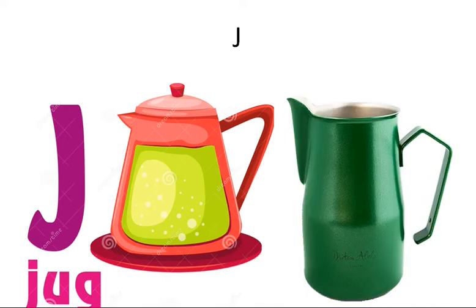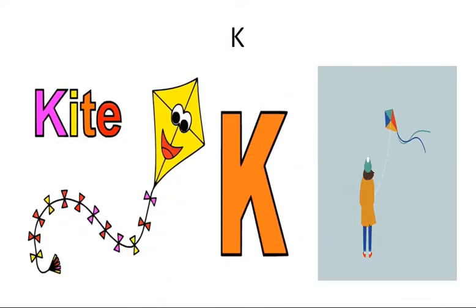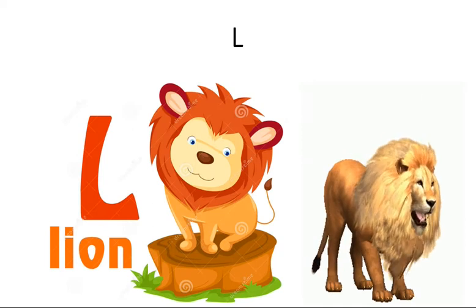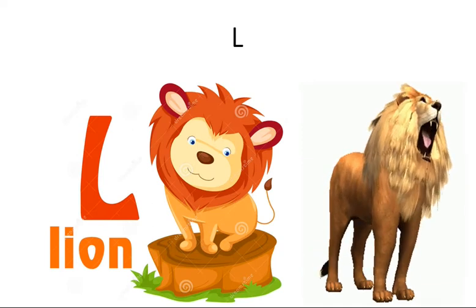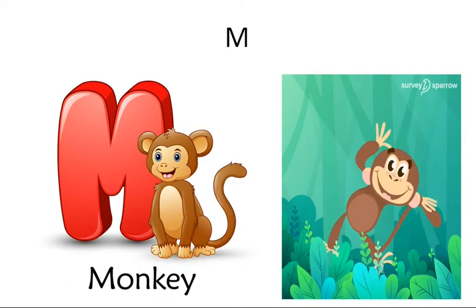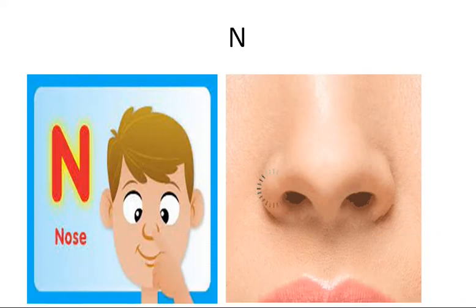J for jug, K for kite, L for lion, M for monkey, N for nose.